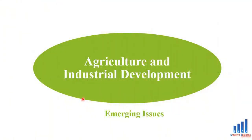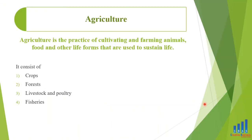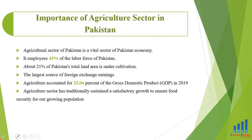آج کا topic agriculture and industrial development ہے۔ Agriculture is the practice of cultivating and farming animals, food and other life forms that are used to sustain life. It consists of crops, forests, livestock and poultry farming and fisheries.